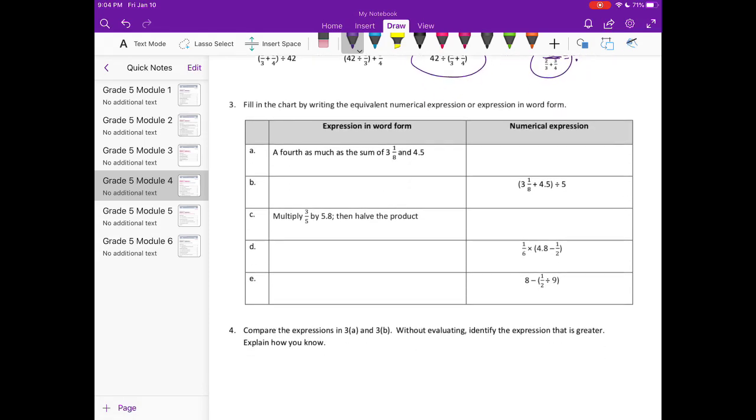Number three, fill in the chart by writing the equivalent numerical expression or expression in word form. A, a fourth as much as the sum of 3 and 1 8th and 4 and 5 10ths. So a fourth as much as the sum. So I'm going to start with the sum of these two, which means we're adding them. So one fourth as much would mean that we're multiplying because we're taking one fourth of, and of means multiply. So we have one fourth of, and then we're adding 3 and 1 8th plus 4 and 5 10ths. So that's one way to write it.